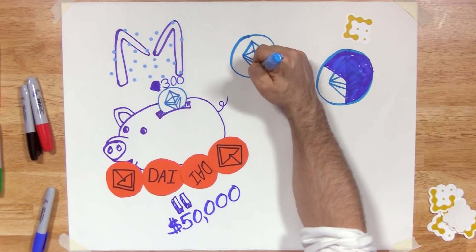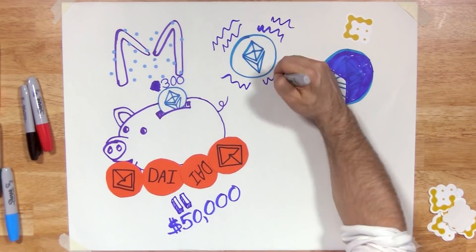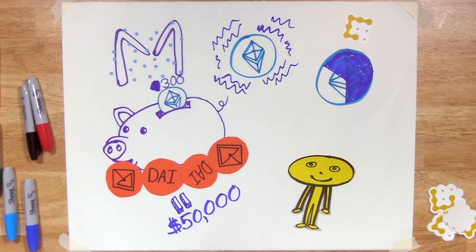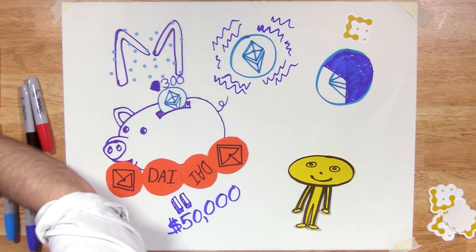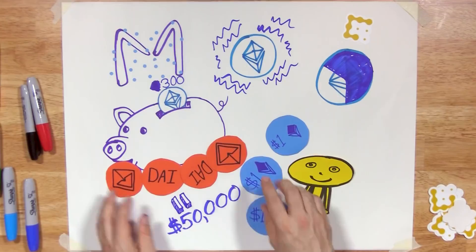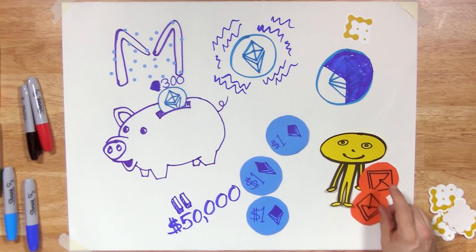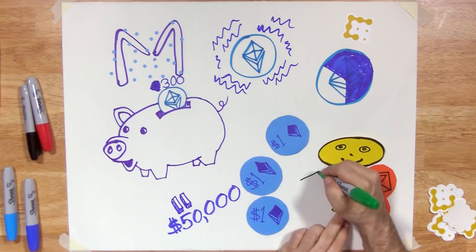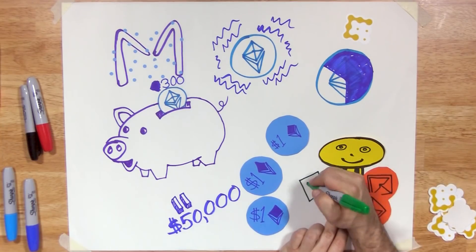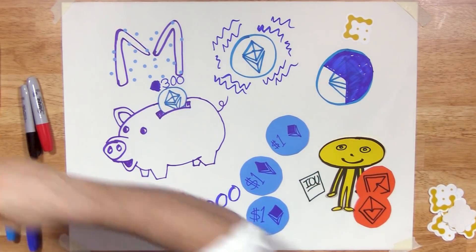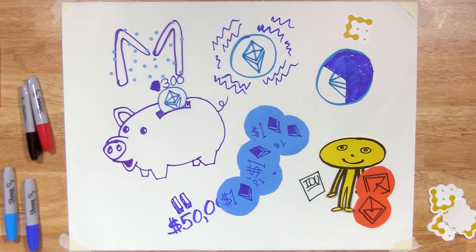Yet because the price of ETH fluctuates so much, the MakerDAO system encourages users to over-collateralize, meaning they'll have to lock in more ETH than they'll get back in DAI. The minimum amount a user must collateralize their DAI loan with ETH is 1.5 times. But people usually collateralize much more.